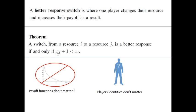This is a really nice result, because what it says is that the only thing players want to do in these congestion games is decrease their congestion level. It means the payoff functions don't actually matter — as long as they're all decreasing functions, the forms of the payoff functions don't matter. Consequently, the identities of the players don't really matter either. We can treat our players as homogeneous, because although they have different payoff functions, that has no effect on their dynamics.